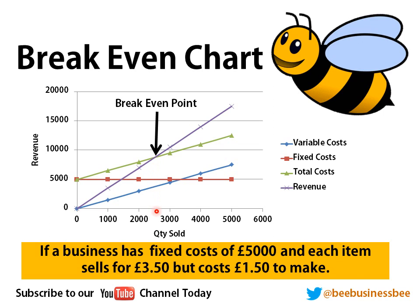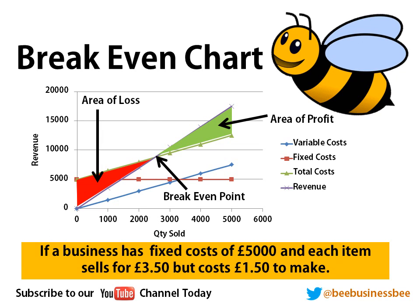We draw a line down and a line across so we can identify our break-even point. We also mark on what we call our area of loss and our area of profit. All that area below our break-even point is an area of loss — because at that point the business is making a loss. But in this part here is the area of profit, because everything you sell past the break-even point is profit. And that is all you need to mark on if you're asked to do that. Really simple, nothing too complex.